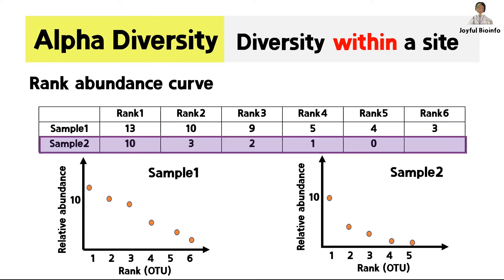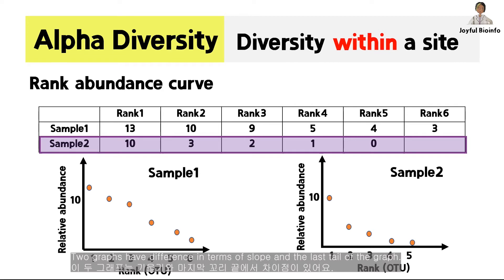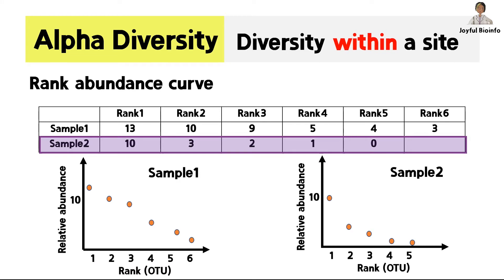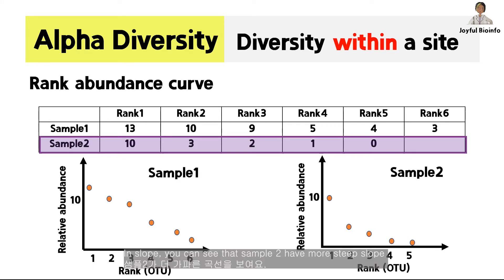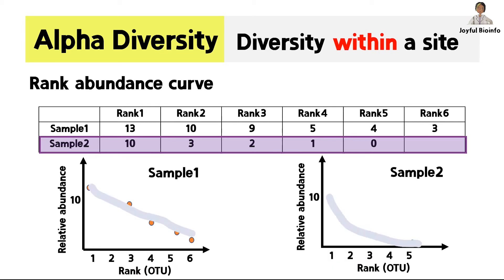The two graphs have differences in terms of slope and the tail of the graph. You can see that sample 2 has a steeper slope. Sample 1 has a thicker tail because it has more number of genera compared to sample 2.